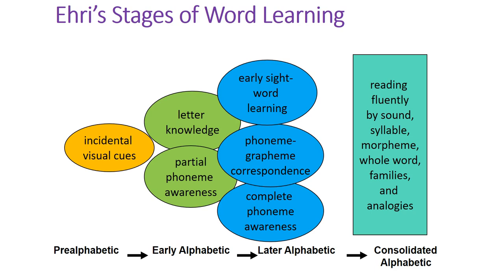Moving into later alphabetic, we start with some early sight word learning — those function words they just have to learn automatically. They're developing phoneme-grapheme awareness, the idea that certain sounds are attached to certain letters. They have complete phoneme awareness, hearing all the sounds in a word — not just the beginning or end, but also the middle sounds. Then they move into the consolidated alphabetic stage, where students can begin more fluent reading, putting all sounds together, recognizing syllables, noticing morphemes and word families, and using those skills as they continue moving forward.